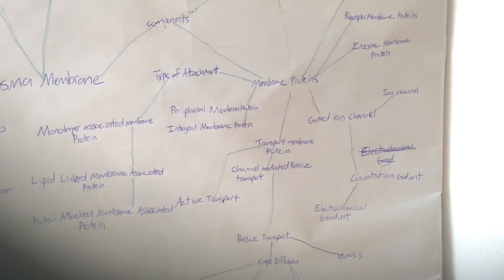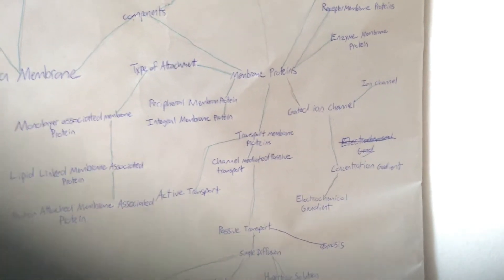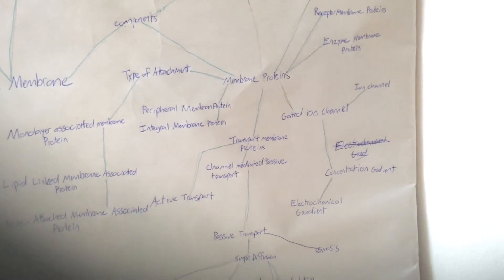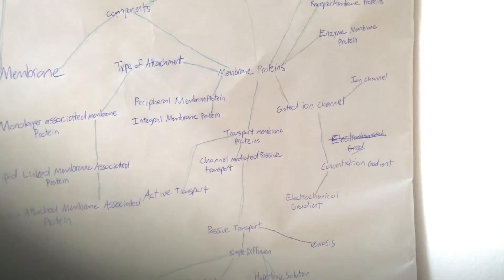Then we have gated ion channel, the ion channel, concentration gradient, which is one of the ways ions travel into the cell, and then electrochemical gradient.